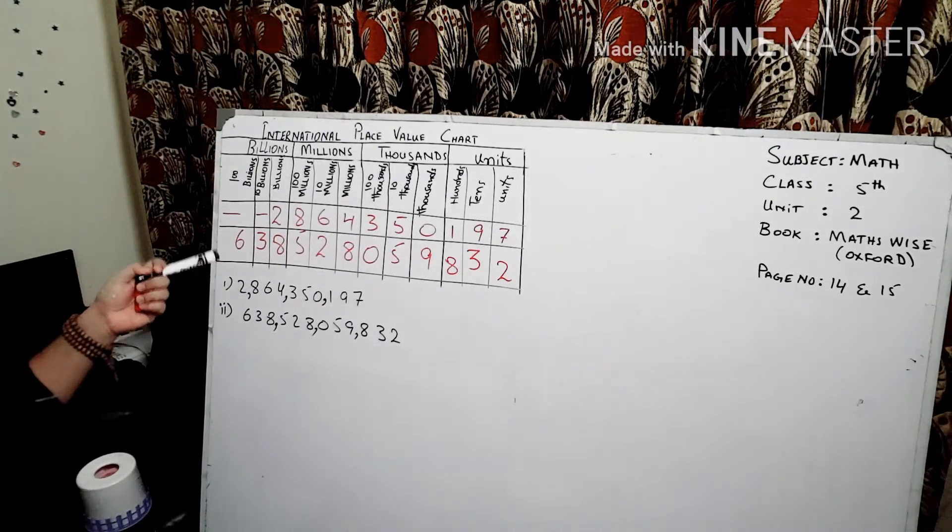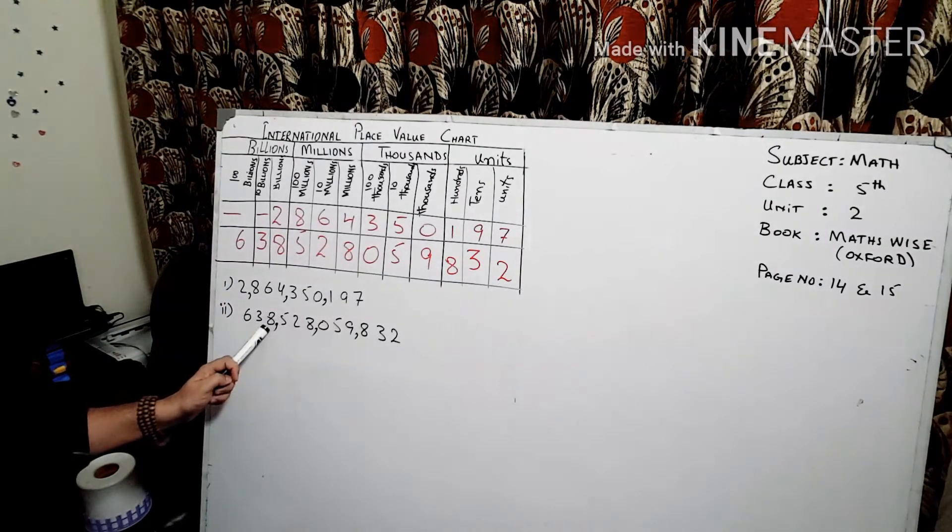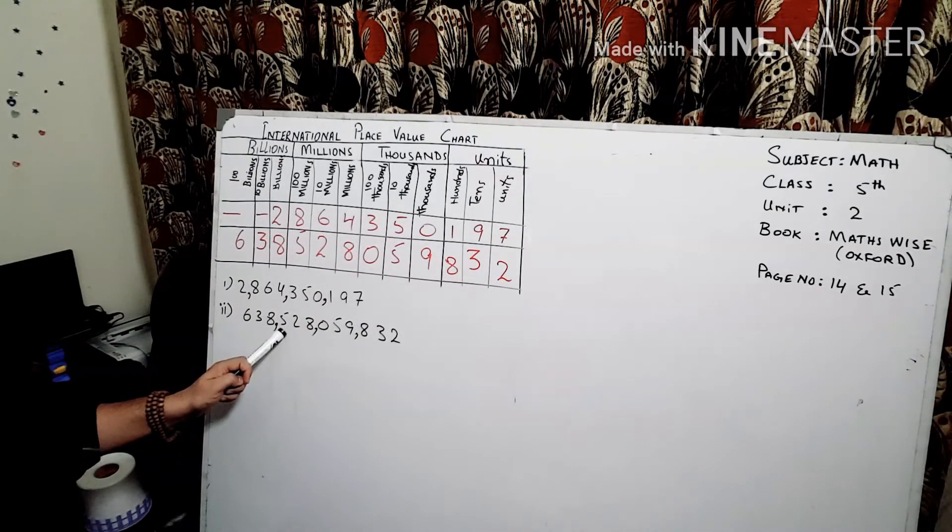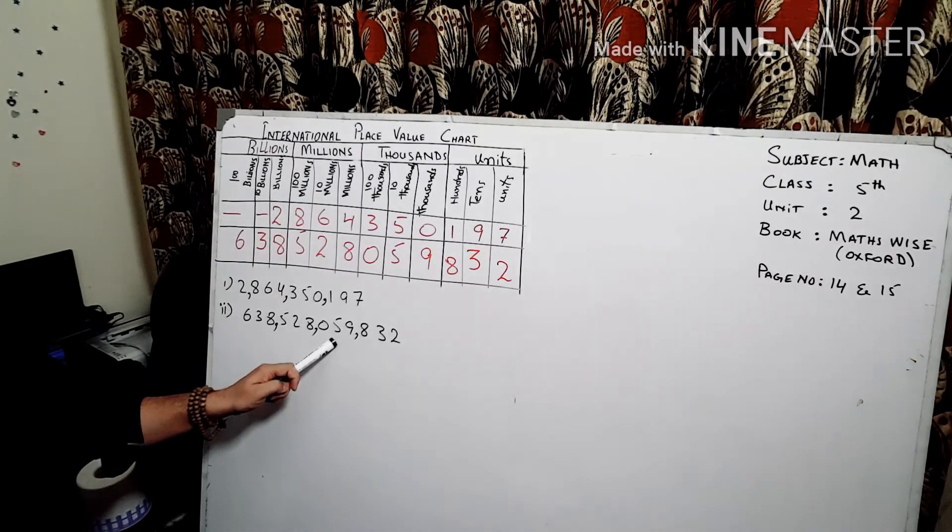So six hundred thirty eight billion, five hundred twenty eight million, fifty nine thousand, eight hundred thirty two.